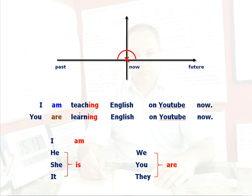Here you see the helping verbs of the present continuous: am, is, are — also called auxiliary verbs in English. We use 'am' with 'I', we use 'is' with singular persons: he, she, it, and we use 'are' with we, you, and they.